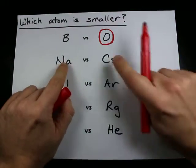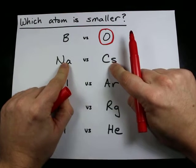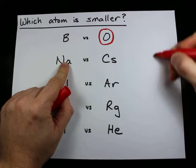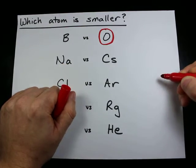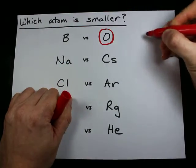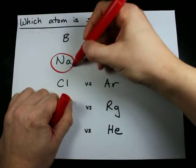If we're comparing sodium and cesium, we'll see that they're both in the first column of the periodic table. Cesium is lower, meaning it's larger, and sodium is higher, meaning it is smaller.